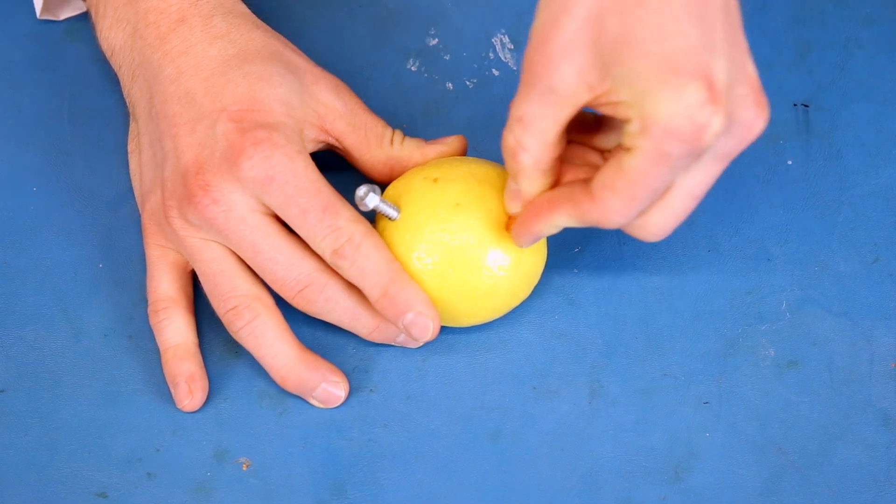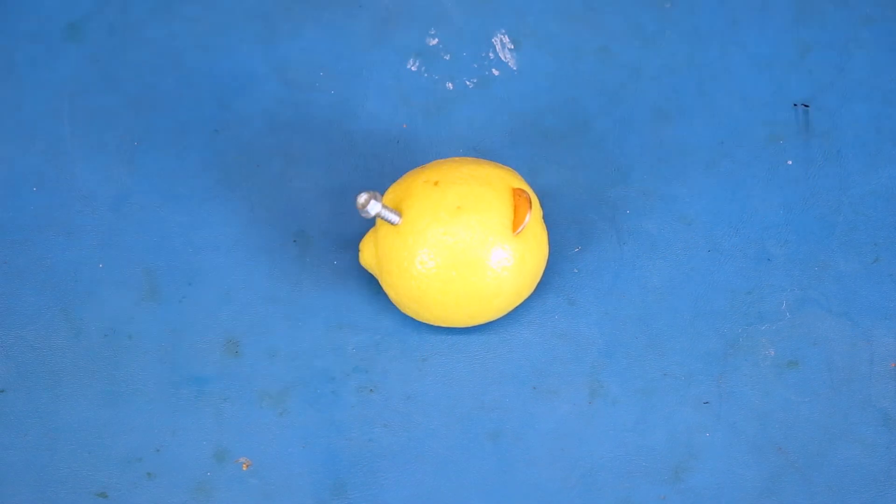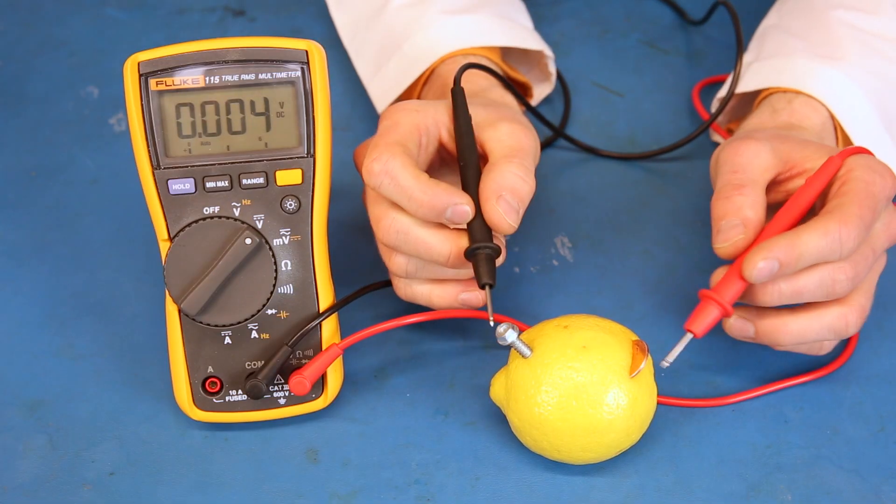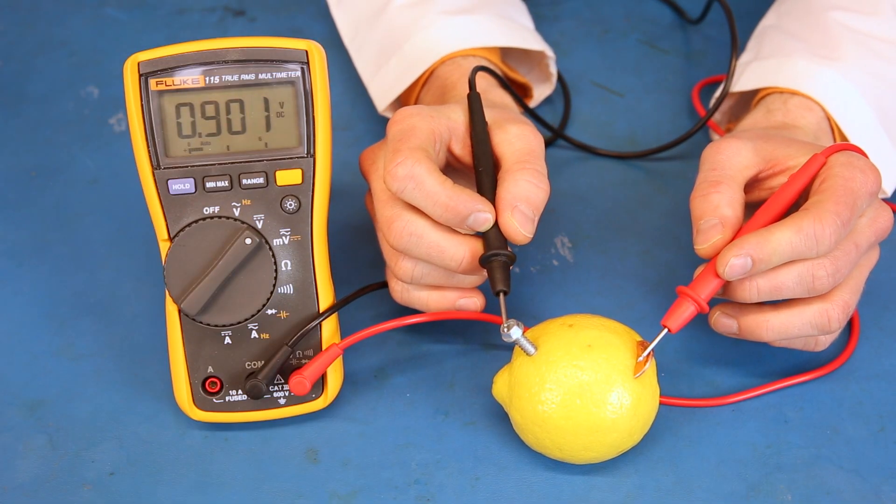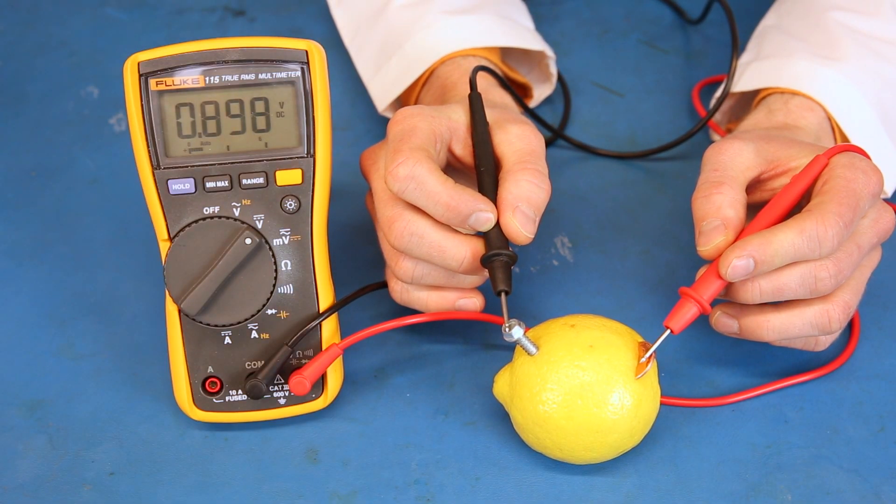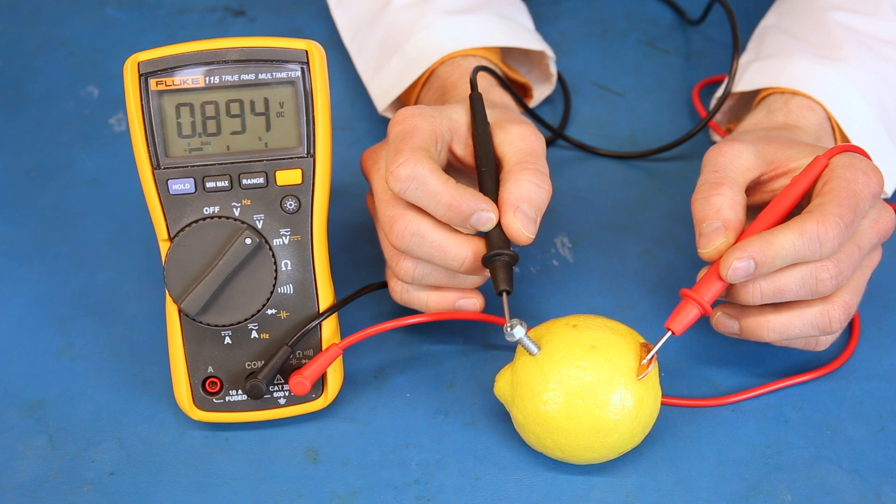This produces electrons that can be moved through our circuit to the penny. The penny is our cathode and accepts the electrons, which are used in another chemical reaction. The electrical potential between the anode and the cathode is about 0.9 volts.